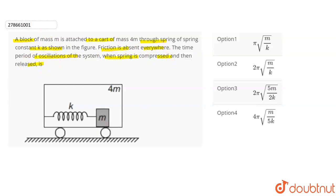So what do we need to find for this system? The time period when spring is compressed and released. Here we have a cart with total mass given as 4M. Inside this cart is a block which has mass M. The block is connected to a spring with spring constant K. The important part is that the spring's other end is fixed to the block which is inside the cart.